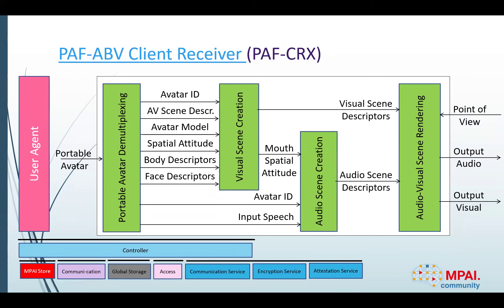This final diagram shows how the receiver client renders a portable avatar. The PATH data received is demultiplexed to extract the avatar ID, the scene descriptor, the model, the spatial attitude, and all the body and face descriptors. These data are then used for the visual and audio rendering of the entire environment. If more than one avatar is present in the conference and virtual space, they are all processed in the same way before the final visual and audio output rendering.